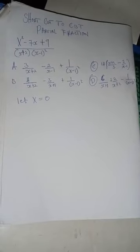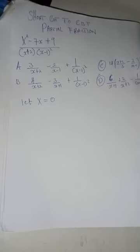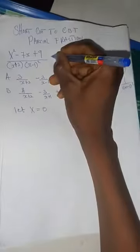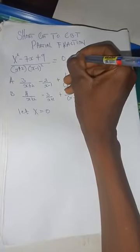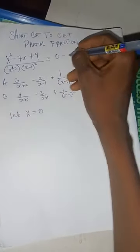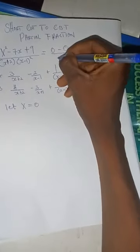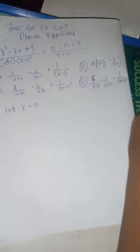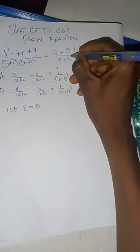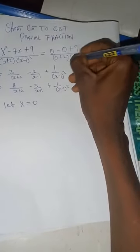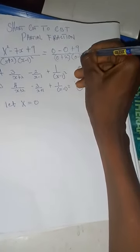Putting X equals zero in the given question, we have zero minus seven times zero, that will give us zero plus nine, over zero plus two all in brackets, multiply by zero minus one all squared.